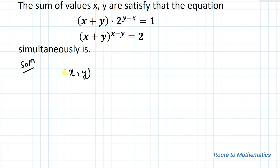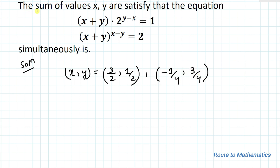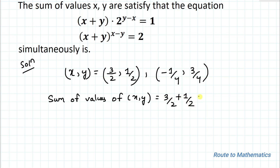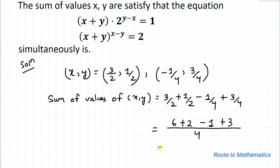The values of x and y are (3/2, 1/2) and (minus 1/4, 3/4). The sum of all values of x and y is 3/2 plus 1/2 plus (minus 1/4) plus 3/4. Taking LCM 4: 6 plus 2 minus 1 plus 3 equals 10 by 4, which simplifies to 5 by 2. That is our answer.